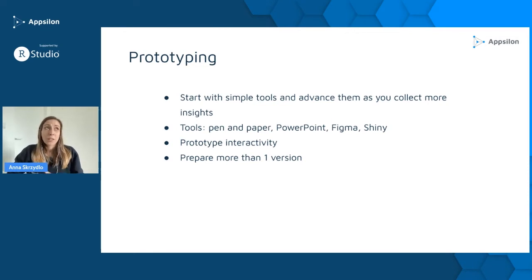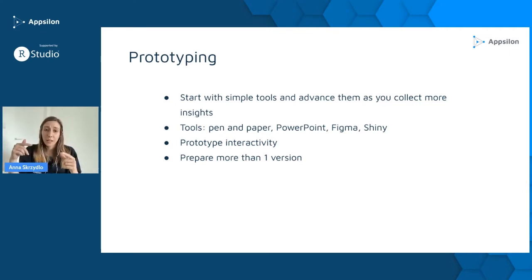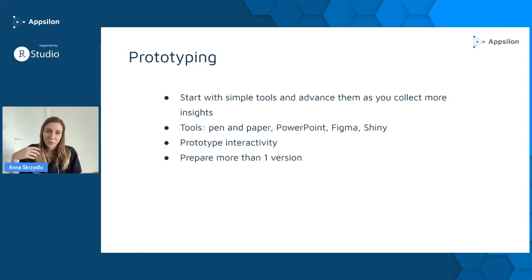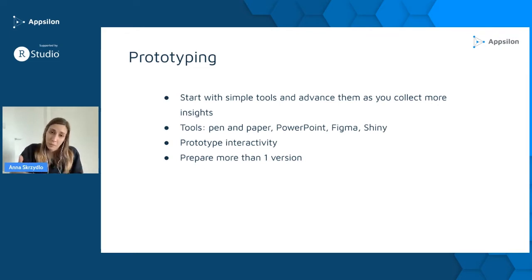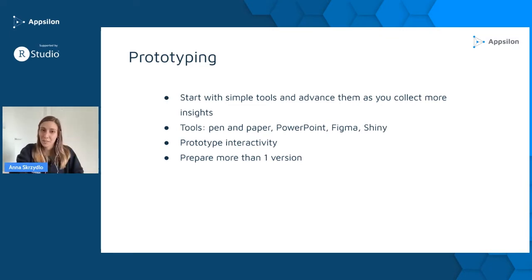Prototyping interactivity is also very important. By prototyping interactivity, I mean having not only flat screens but also connections between them — so you can show that if a user clicks this button, this screen appears. This is important because only through prototyping it can you see strange behaviors, leaks in the user flow, something that makes the app not easy to use. You can prototype that even with pen and paper — cut out elements and move them around to show what happens next.